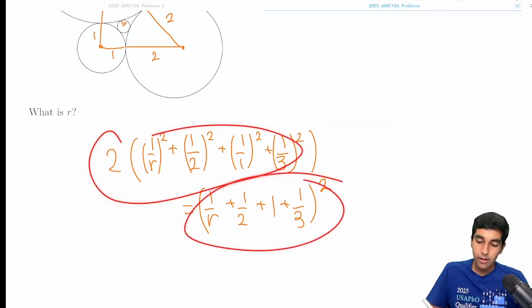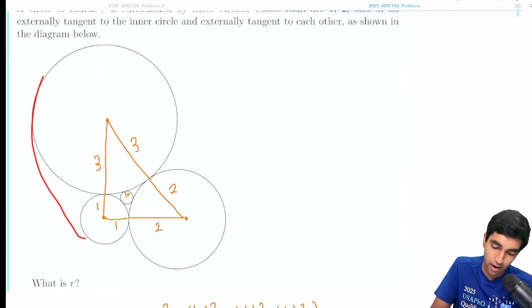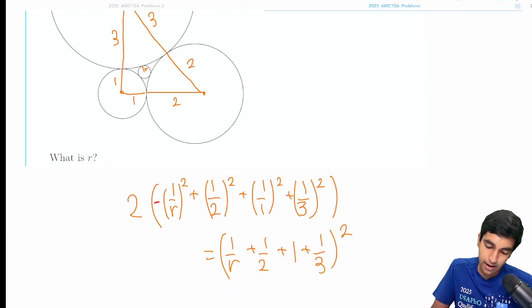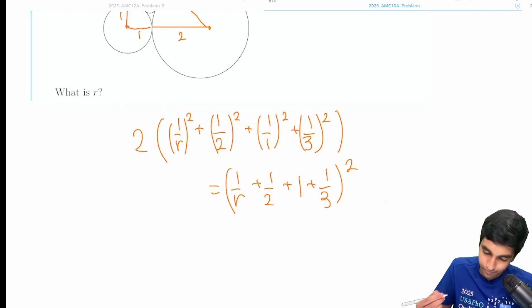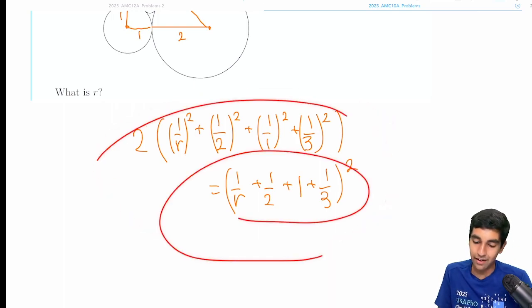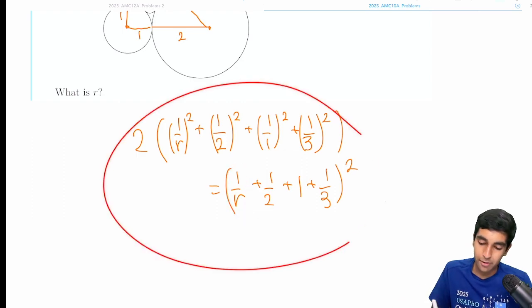Two times the sum of the squares equals the sum squared. And then something interesting here: if we were asked to find a circle around all of this, then we would just make the curvature negative. So we would have negative 1 over r here. And this would just be the same because of squaring it. That's the general setup equation. I'm not going to go through the calculation here, but this is a pretty straightforward calculation.